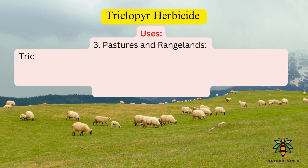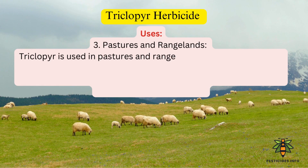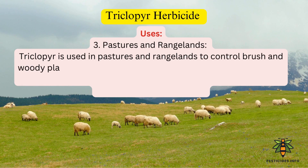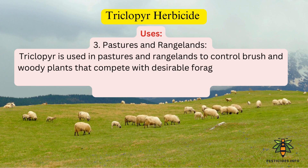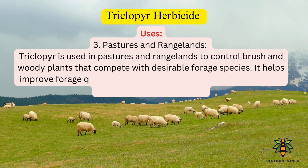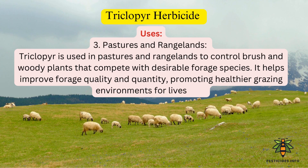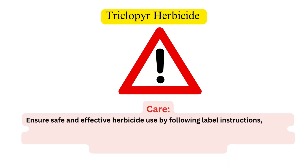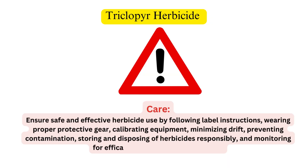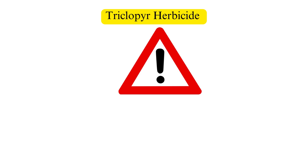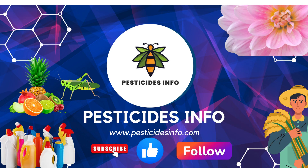3. Pastures and rangelands. Triclopyr is used in pastures and rangelands to control brush and woody plants that compete with desirable forage species. It helps improve forage quality and quantity, promoting healthier grazing environments for livestock. Thanks for watching our pesticide info video — follow us for more updates and subscribe on YouTube.